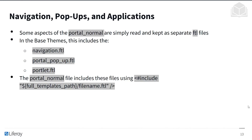Some aspects of portal_normal are read and kept as separate FTL files — navigation, portal popup, and portlet FTL. This helps with modularity so you're not placing all elements into portal_normal. Developing them in separate FTL files makes maintenance easier and increases reusability. For example, if you want to include navigation.ftl in a page that doesn't normally have navigation, you can do that without copying the entire navigation code. The portal_normal file includes these files using the include directive with the full template path.